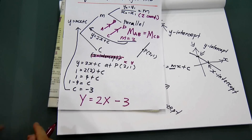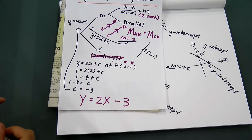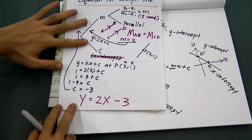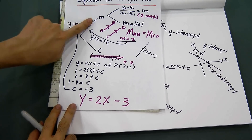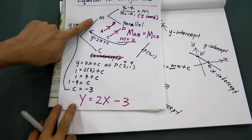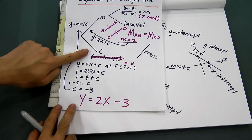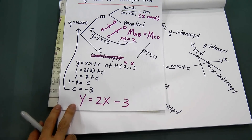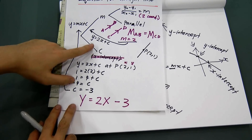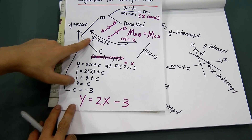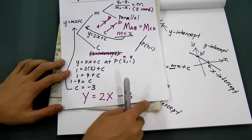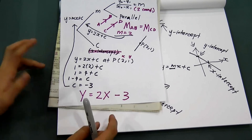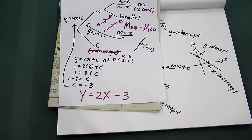That is the equation for a straight line. Remember, c is always the y-intercept, meaning the straight line cuts the y-axis there. To summarize the two steps: step one, find the gradient; step two, substitute one point into the equation to get the full equation. That's all for this video, thank you.